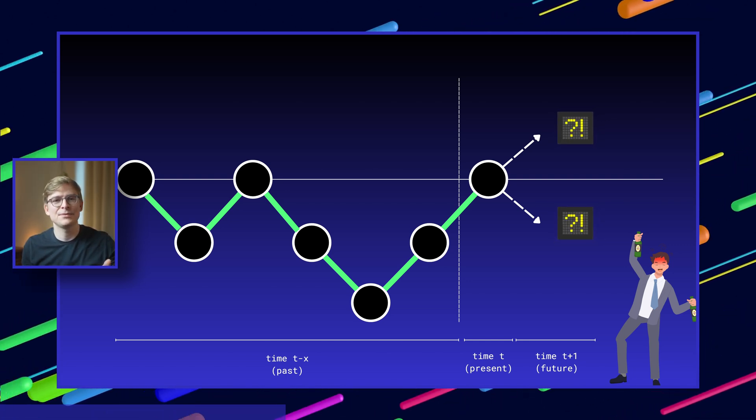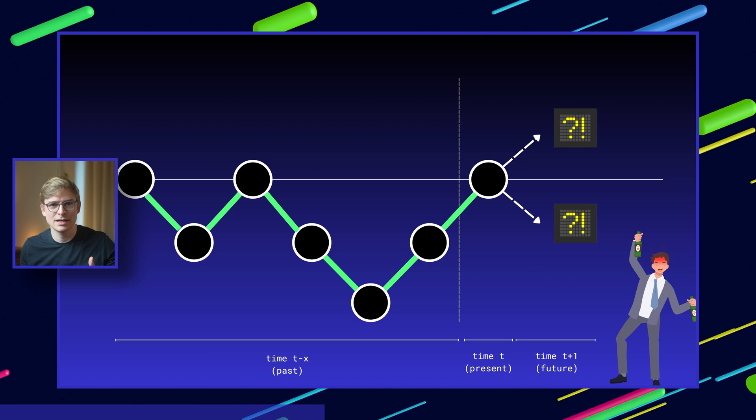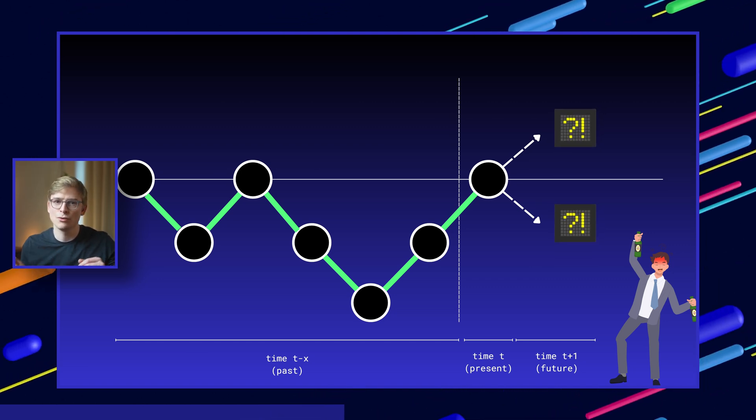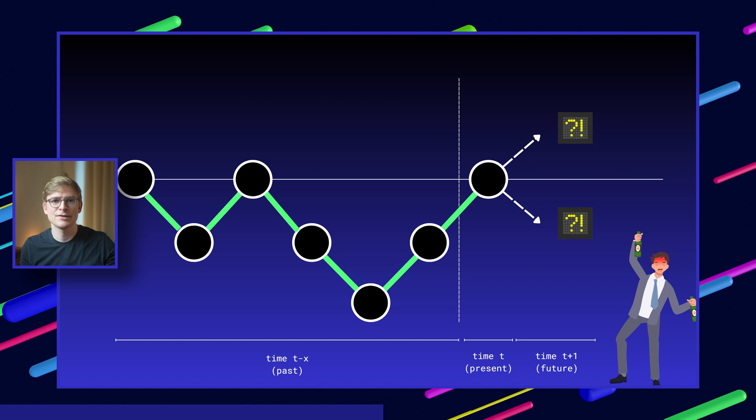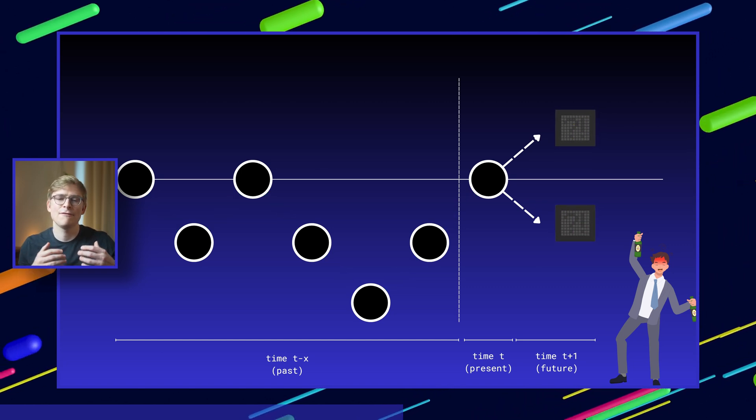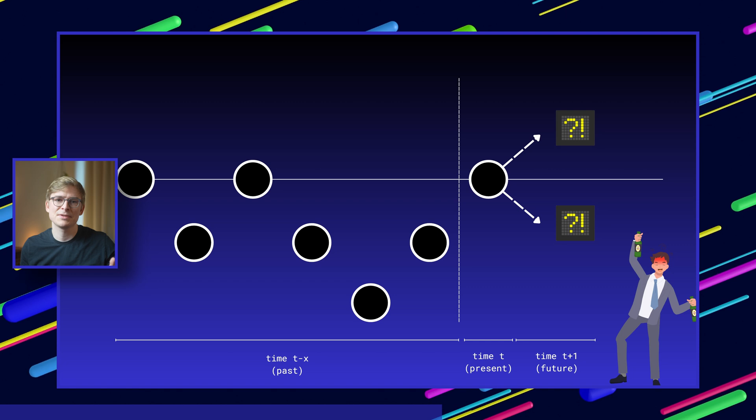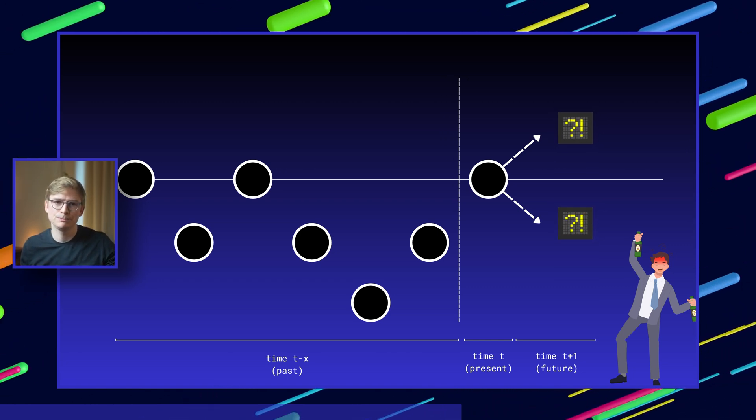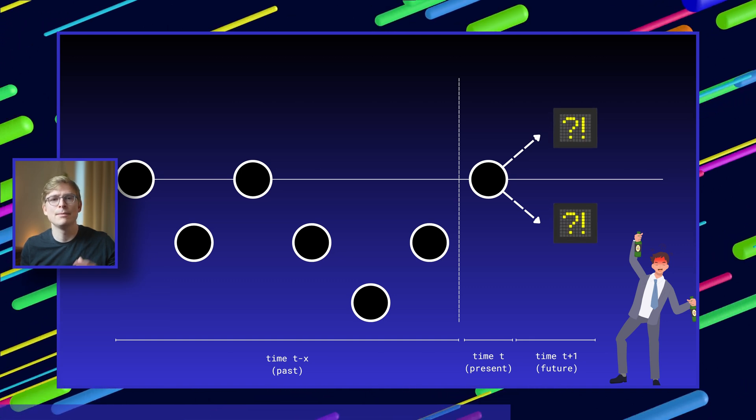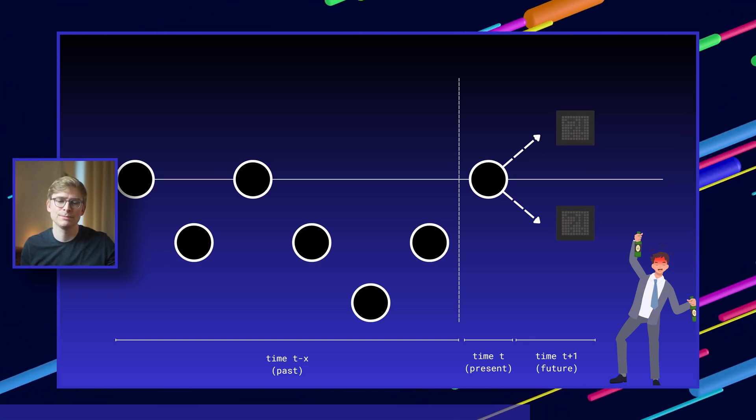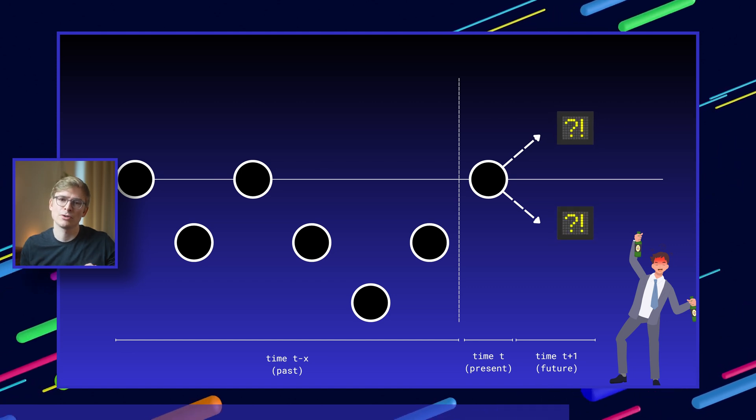If we consider the drunken person's steps as a chain of events, we can see that the direction of their next step, whether they waver left or right, doesn't really depend on how they got to their current position in the first place. In other words, their future movement depends only on where they are right now, not on the steps they've taken to reach that point. This random walk analogy of the drunken person is a great way to illustrate the memoryless property of Markov models. Future steps depend only on the current position, not on the past.